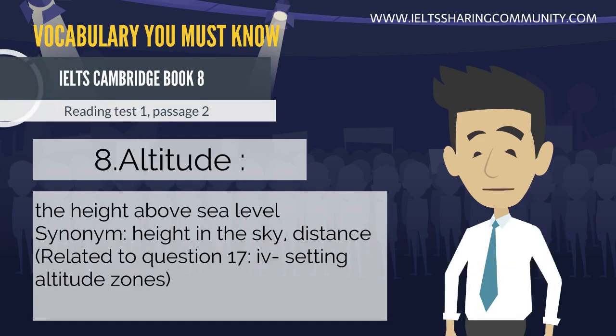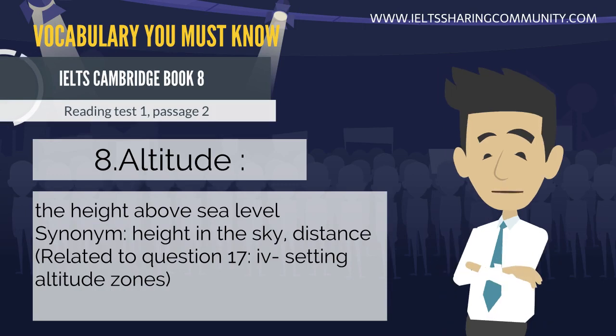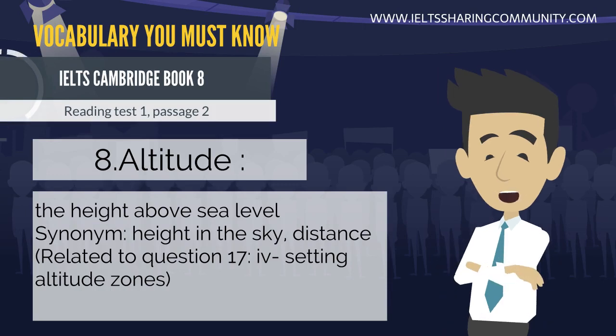8. Altitude — the height above sea level. Synonyms: height in the sky, distance. Related to question 17: setting altitude zones.